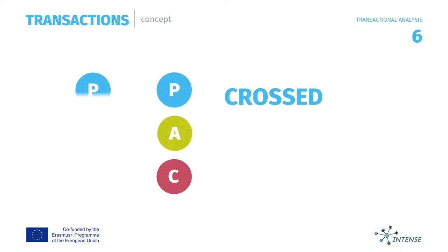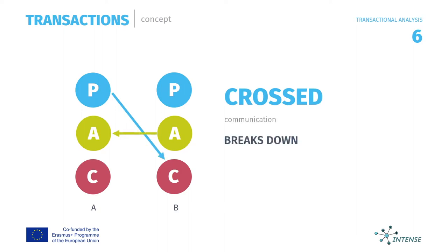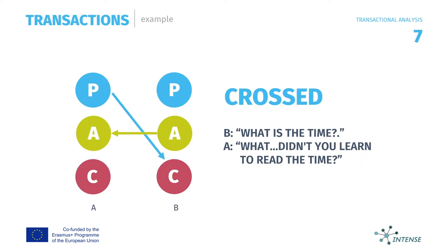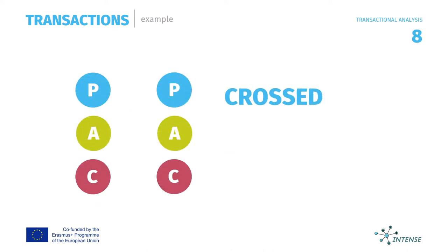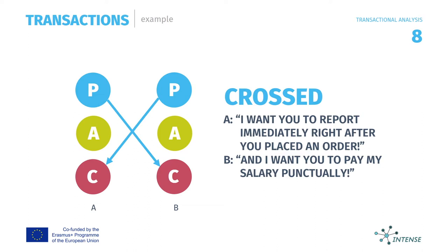When people communicate with cross transactions, it causes a transactional breakdown. Cross transactions occur when an unexpected response is made to a message that a person sends out — they hold the potential for conflict. In the first example, the respondent comes from a critical parent ego state, crossing the transaction and breaking down communication: 'What's the time?' — 'What, didn't you learn to read the time?' In the second example, the respondent comes from a parent ego state instead of a child, crossing the transaction: 'I want you to report immediately right after you place an order.' — 'And I want you to pay my salary punctually.'